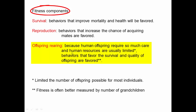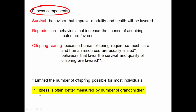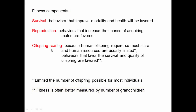For humans we're kind of unusual, because human offspring require so much care and human resources are usually limited, which limits the maximum number of offspring most individuals can have. Compared to other animals, behaviors that favor the survival and quality of offspring are favored. With humans, fitness is often best measured via the number of grandchildren produced.